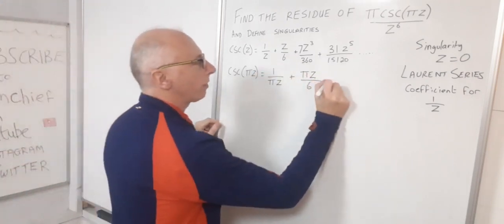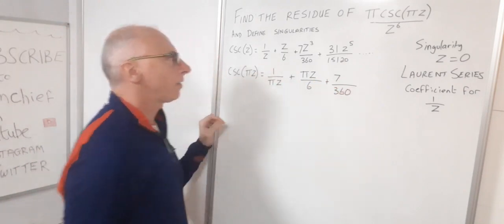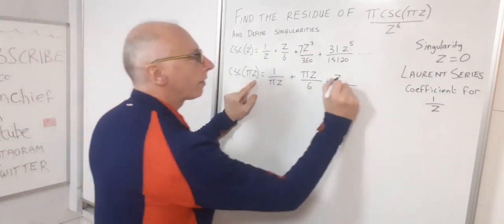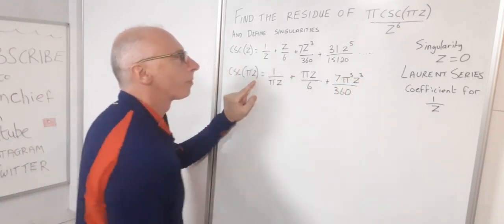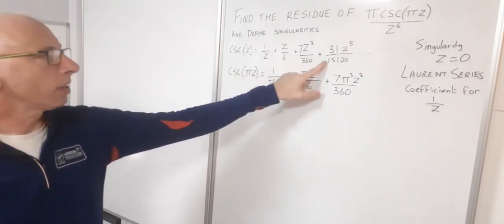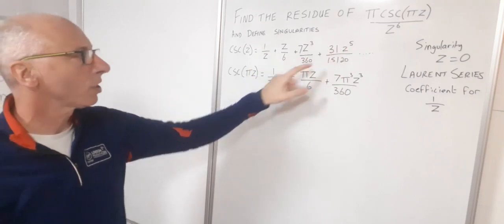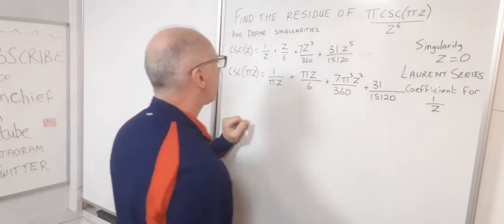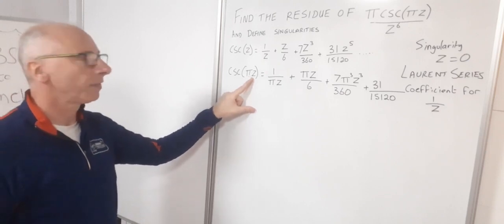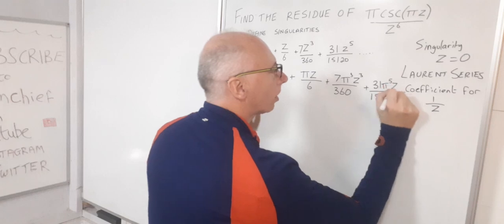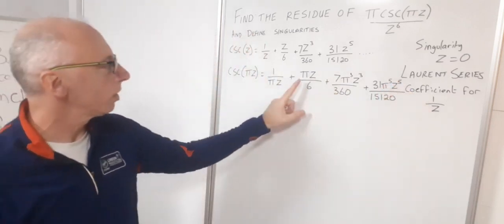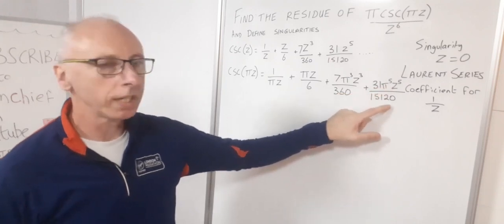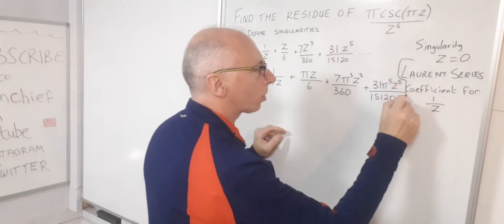Now this term here we're going to need to be a little bit more careful. We've got the 7/360 that's fine but we've got a z cubed. Now if our z is going to be changed to πz we're now going to have π³z³. That's going to be that term. And then for this term very similar, just be careful with the z to the 5 but this coefficient must stay. Just take this to the power of 5 which gives us π⁵z⁵. So basically our coefficients for these terms are π/6, 7π³/360, and 31π⁵/15,120.